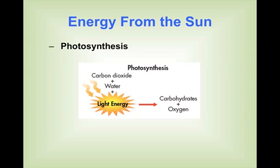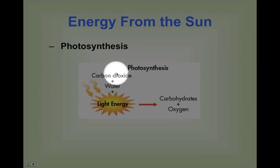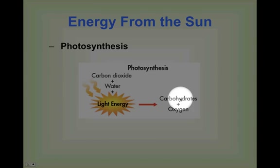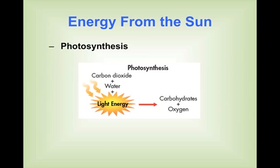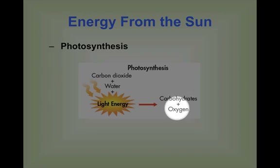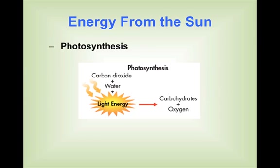Photosynthesis can be summed up as: carbon dioxide plus water plus light energy produces carbohydrates — that's sugars — and oxygen. We use both of these: oxygen for metabolic pathways, and carbohydrates as a source of energy. This only happens because we get them through the process of photosynthesis. We'll talk about photosynthesis in more detail in a later chapter.